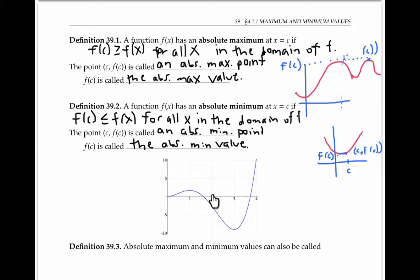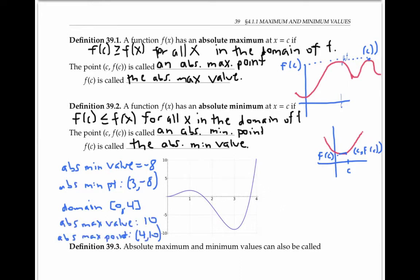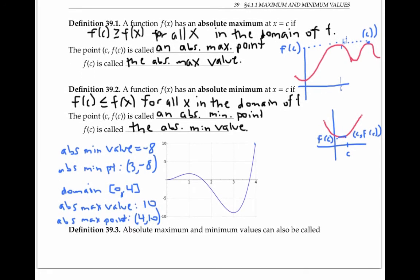For example, this function has an absolute minimum value of about negative eight, and an absolute minimum point with coordinates three, negative eight. If this function stops here and just has a domain from zero to four, then the function has an absolute maximum value of 10 at the absolute maximum point with coordinates four, 10. If the function keeps going in this direction, it will not have an absolute maximum value at all. Absolute maximum and minimum values can also be called global maximum and minimum values.